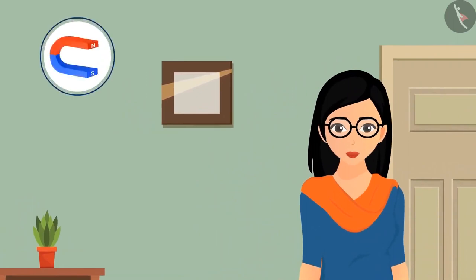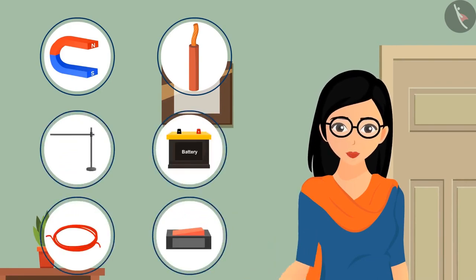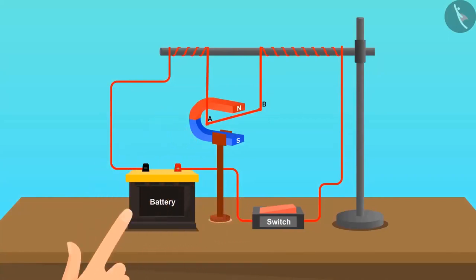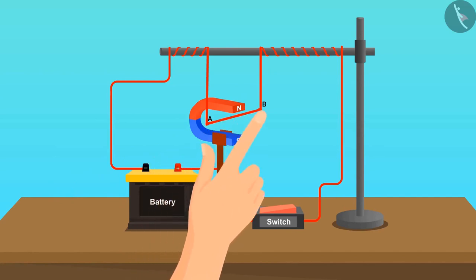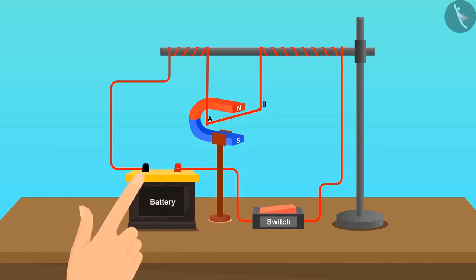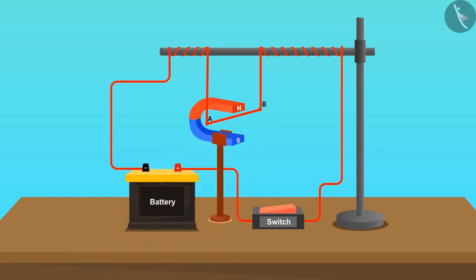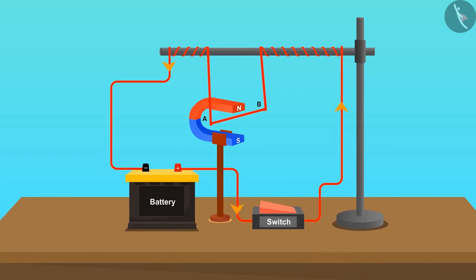To perform this activity, we need a horseshoe magnet, a piece of copper wire, a stand, a battery, a switch, and connecting wires. Place the horseshoe magnet on the stand such that the north pole is vertically above the south pole. Hang the copper wire between the poles of the magnet with the help of the stand, and connect its ends with the positive and negative terminals of the battery. Put on the switch after completing the circuit. We can see the deflection in the wire in one direction, which continues as long as the switch is on.